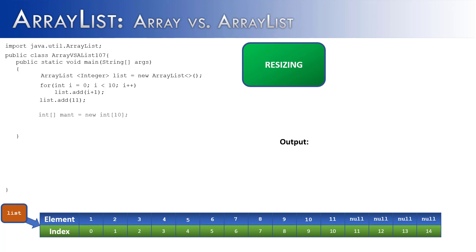What about arrays? There's no array equivalent. That's really the key difference: array lists are called dynamic because they can dynamically resize themselves without any extra work. Arrays are immutable — if you set the length to 10, it's going to be 10 for its entire life. You can create a new array, copy everything over, and add new elements, but it's far easier to just let array list do that.